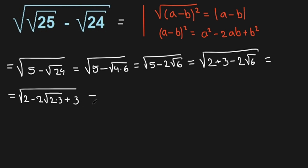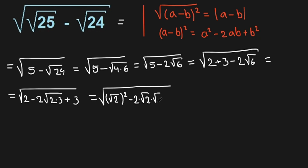This can be written as the square root of: 2 squared, minus 2 times the square root of 2 times the square root of 3, plus 3, which can be written as the square root of 3 squared. Here we have our formula — (a minus b) squared — that we wrote before.